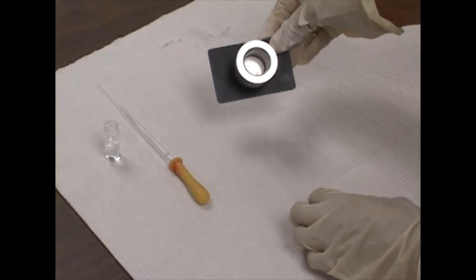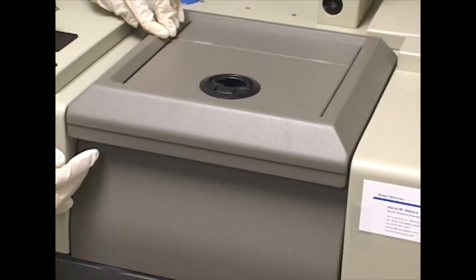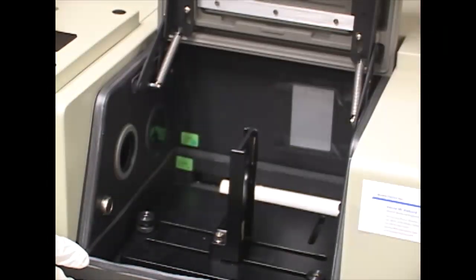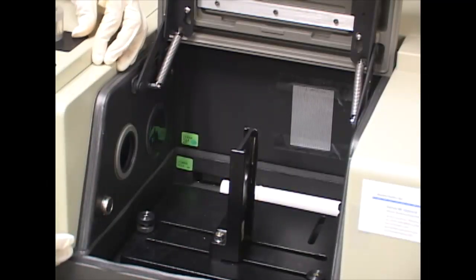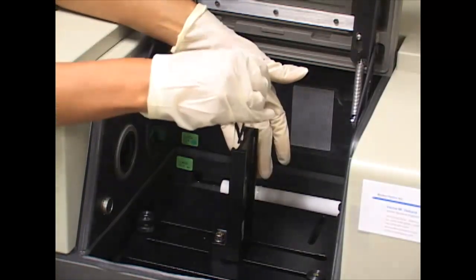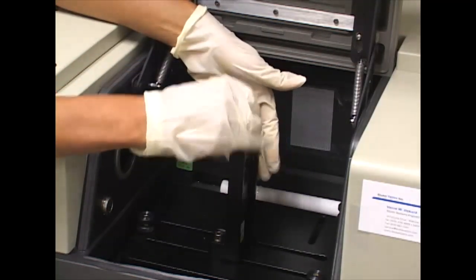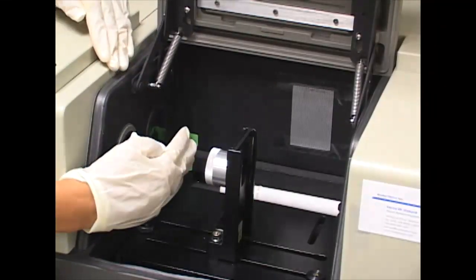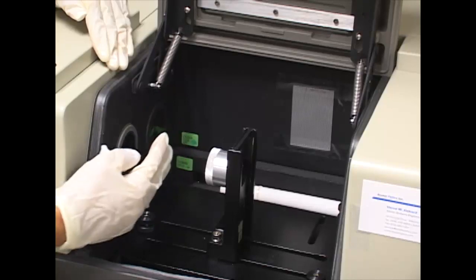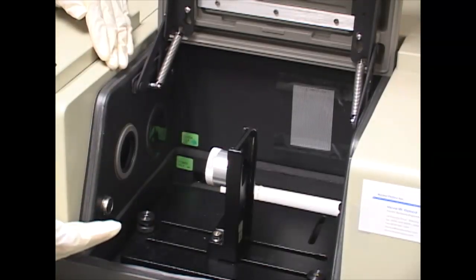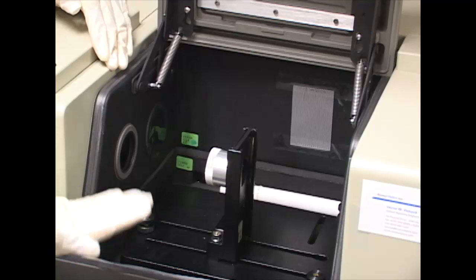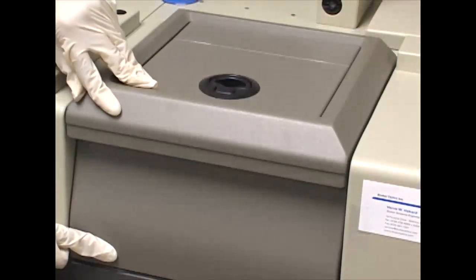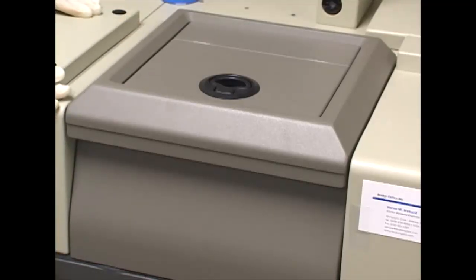In order to place our sample in the FTIR instrument cavity, we're going to open it and slide our sample holder in, making sure that the laser is going through the sample. You can do that easily by either putting a piece of paper or placing your hand and seeing the laser beam. Then we close it, make sure it is securely closed, and start running our sample.